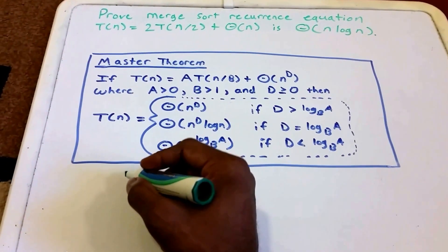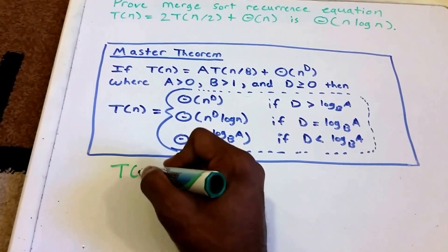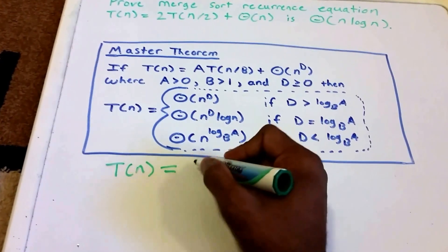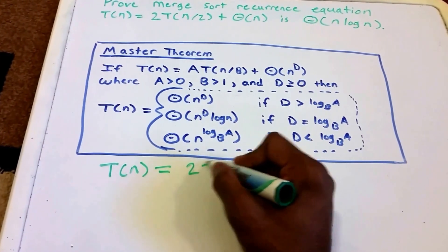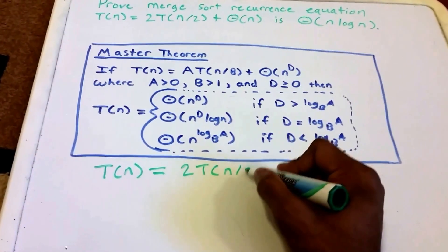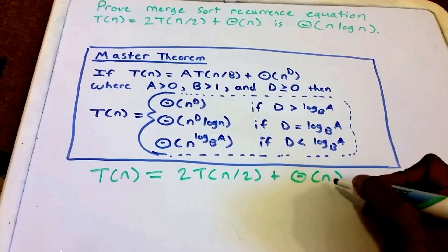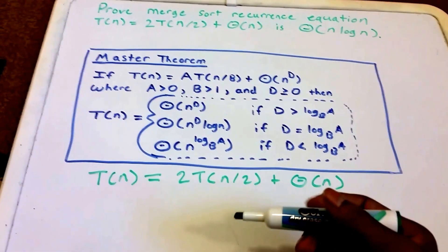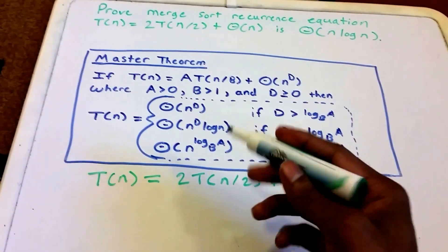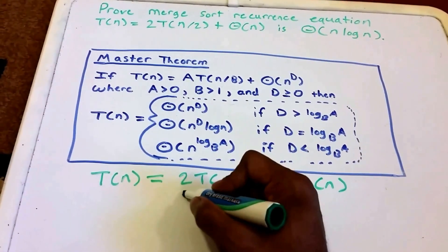What I'm going to do first is rewrite our recurrence, our function T. So T(n) = 2T(n/2) + Θ(n). We can see that it's already in the form to use the Master Theorem.